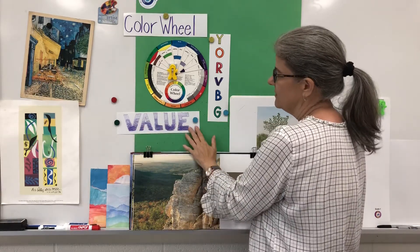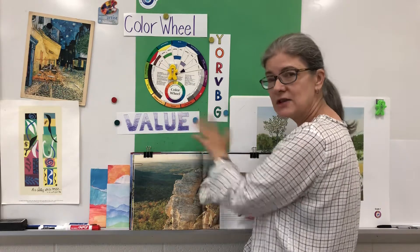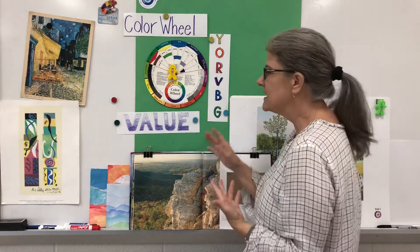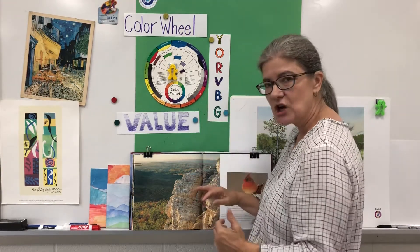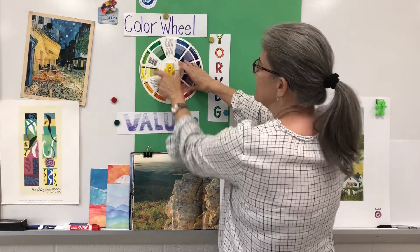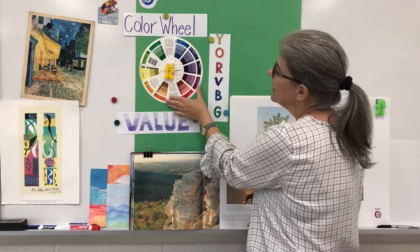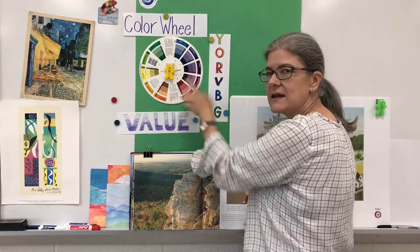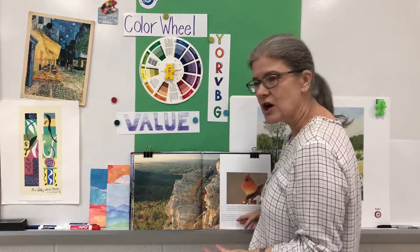Let's talk about what value is. I have used a light, medium, and dark purple to color in the letters V-A-L-U-E for the word value. Value, with regard to color, just means the lightness or darkness. So if I flip my color wheel over, you can see different tints and shades of a color. For example, pink is like a light red and burgundy is like a dark red. Any color can be lighter or darker.